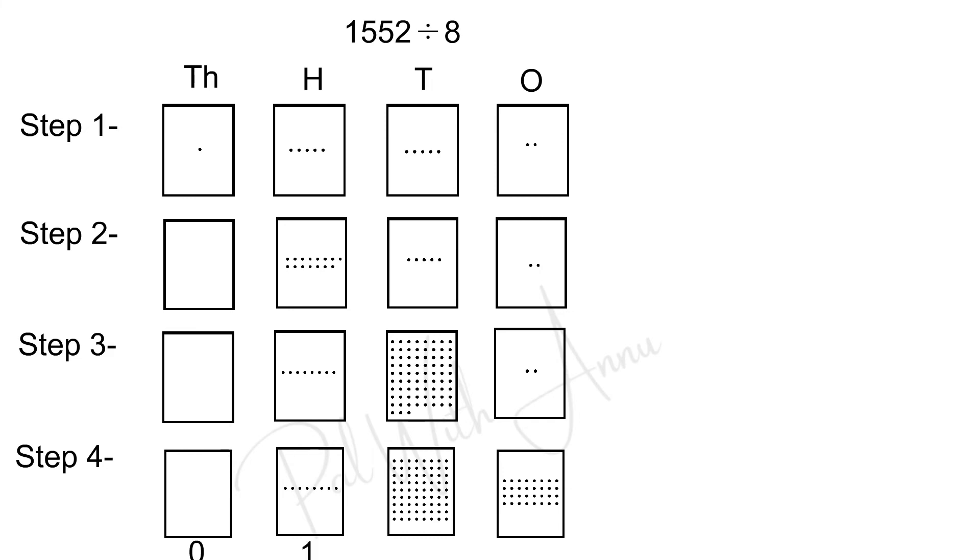Now, there are 9 rows are there in the 10's box and each row containing 8 dots. That means, 8 into 9 equals to 72. So, here you write 9.